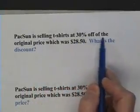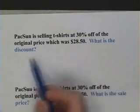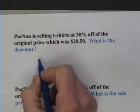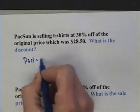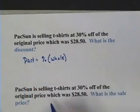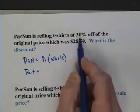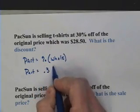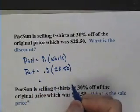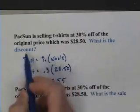PacSun is selling t-shirts at 30% off of the original price, which was $28.50. What is the discount? In the past, you most likely would have done a problem like this by taking the formula: part equals the percentage times the whole value, or the original value. We would say the part is the percentage — we'll change that to a decimal — times the whole amount of $28.50. When I multiply those things out, I get $8.55. That is the discount.